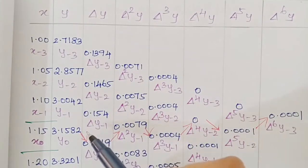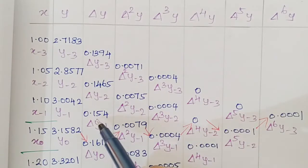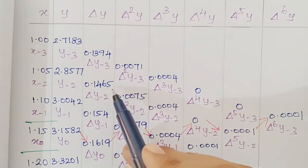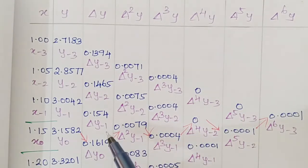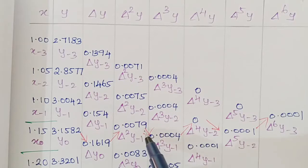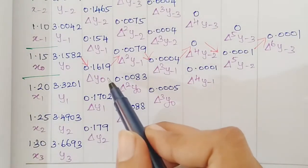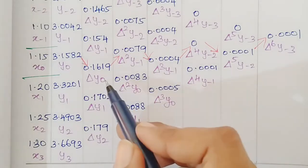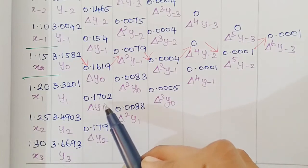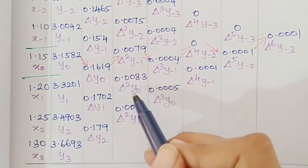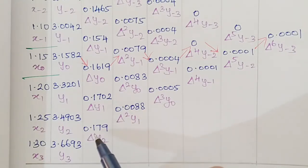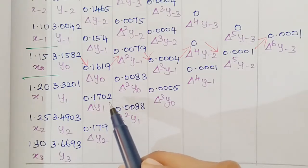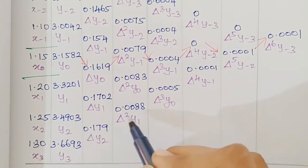Continuing the difference table: δy₋₁ = 0.154, δy₀ = 0.1619, δy₁ = 0.1702, δy₂ = 0.179. For second differences: δ²y₋₂ = δy₋₁ minus δy₋₂ = 0.154 minus 0.1465 = 0.0075. δ²y₋₁ = δy₀ minus δy₋₁ = 0.1619 minus 0.154 = 0.0079. δ²y₀ = δy₁ minus δy₀ = 0.1702 minus 0.1619 = 0.0083. δ²y₁ = δy₂ minus δy₁ = 0.179 minus 0.1702 = 0.0088.